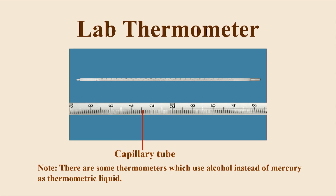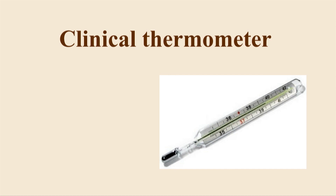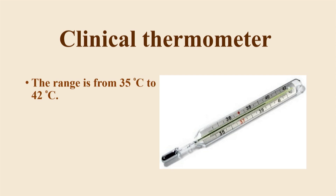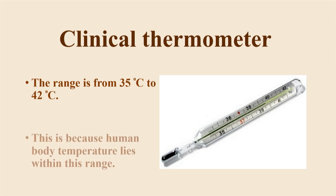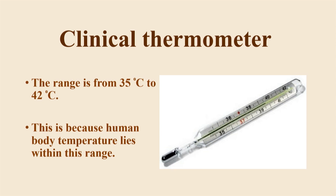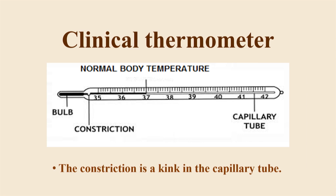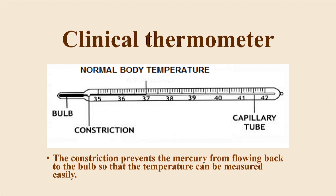It is also important to point out that some thermometers use alcohol as the thermometric liquid. The clinical thermometer is used to measure the temperature of the human body. This is why it has a small range, from 35 degrees Celsius to 42 degrees Celsius, as human body temperature lies within this range. Clinical thermometers also have a U-shaped constriction next to the bulb along the capillary tube, which prevents the mercury from flowing back so that the temperature can be measured easily.